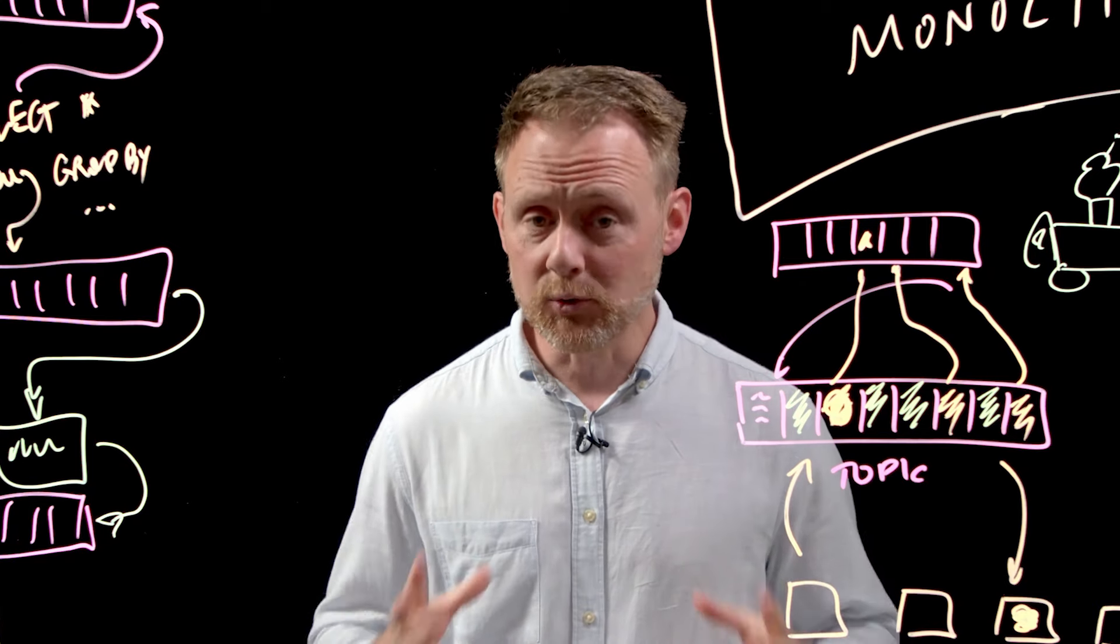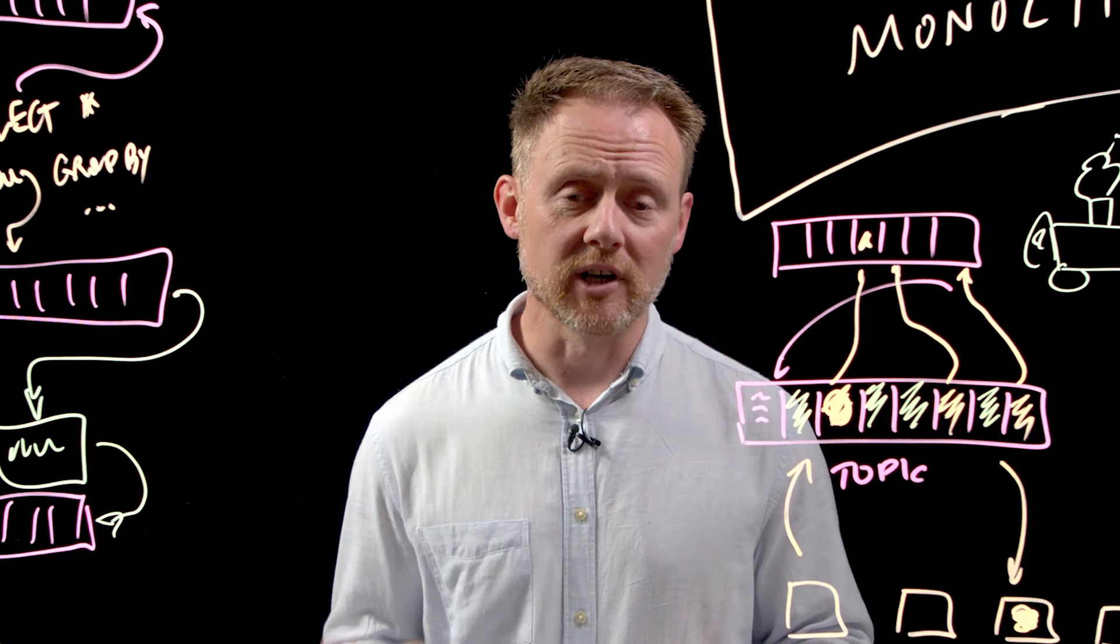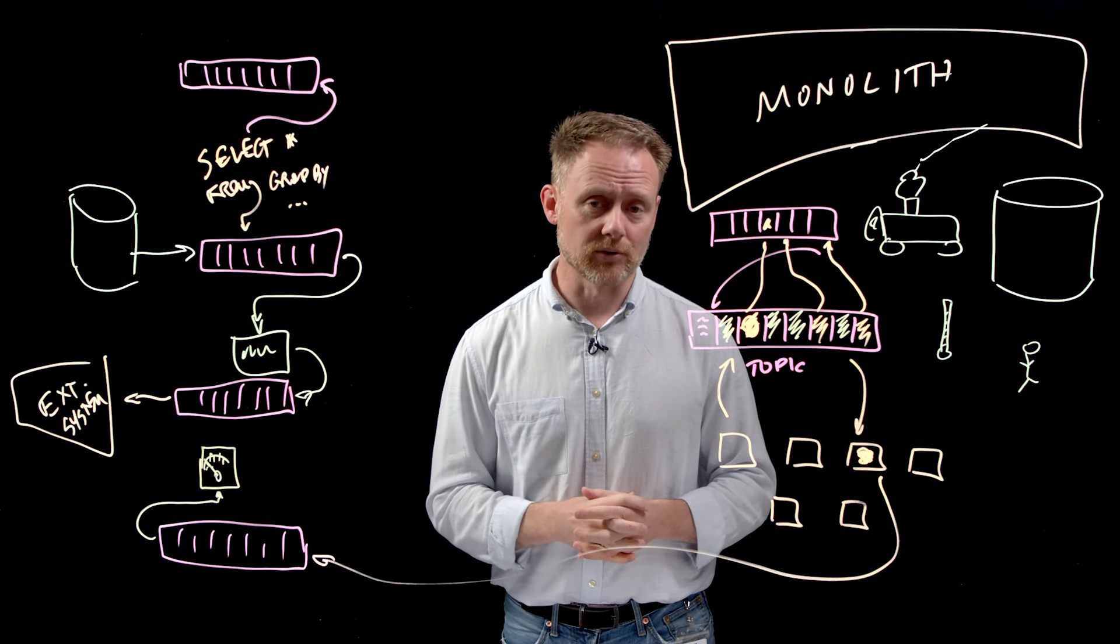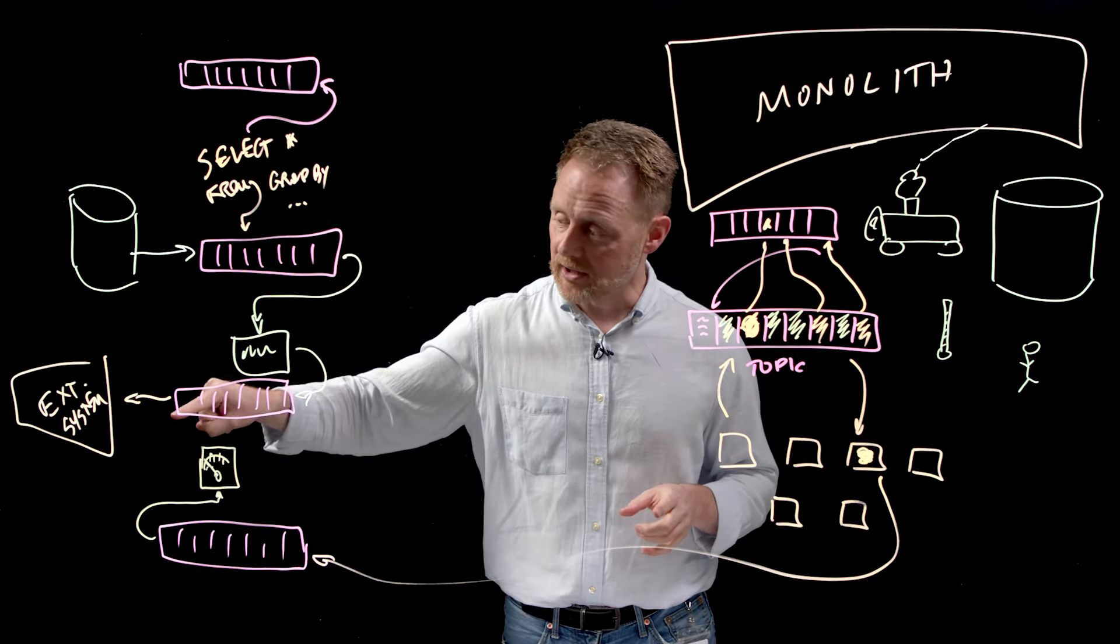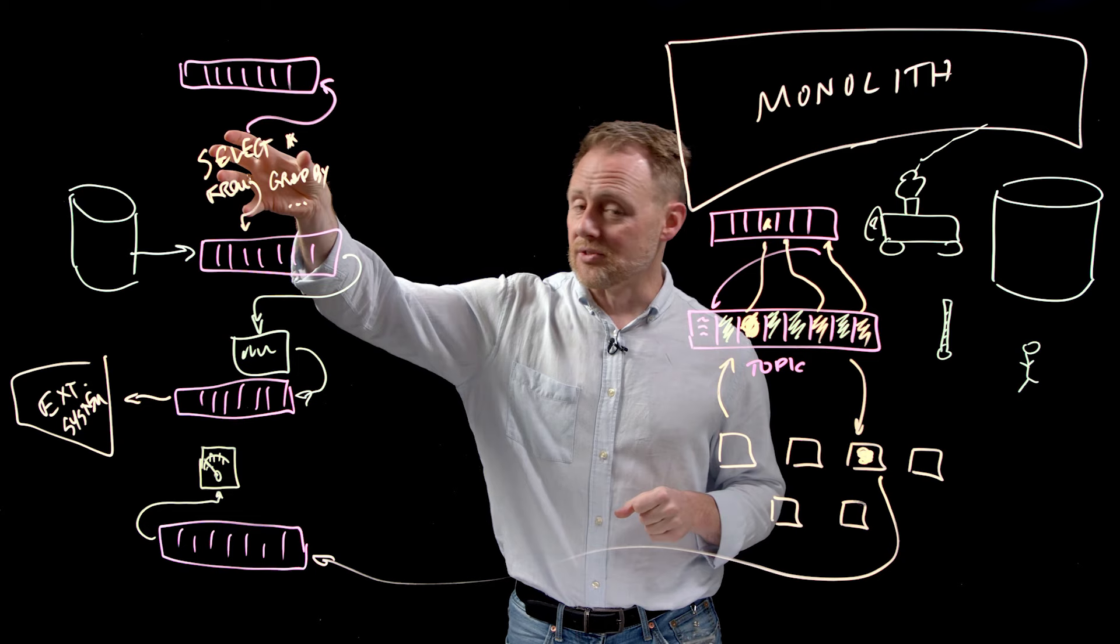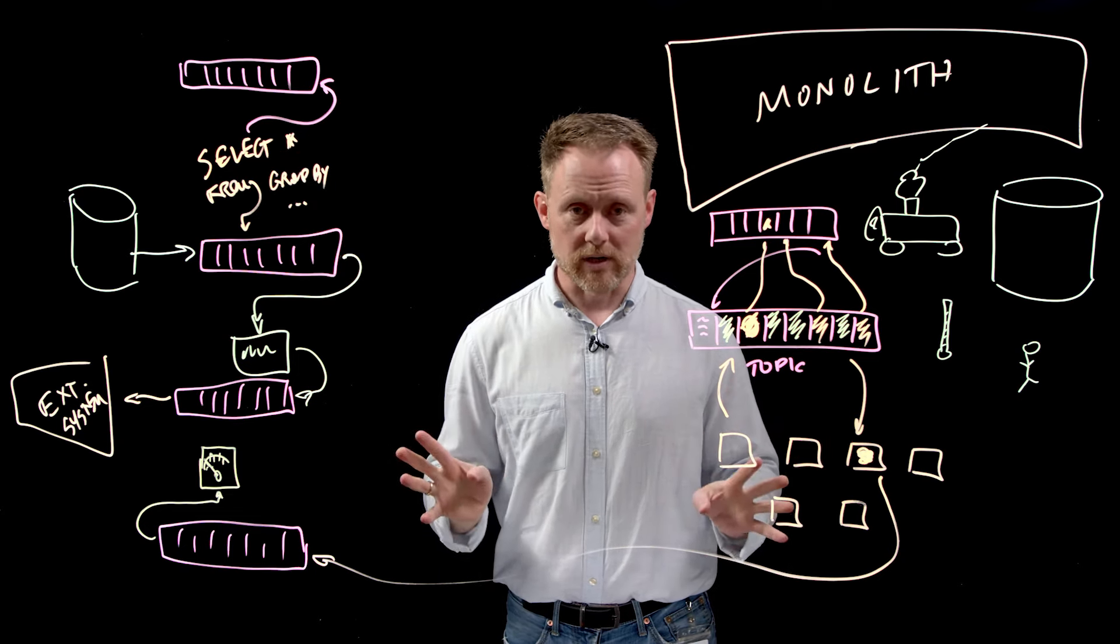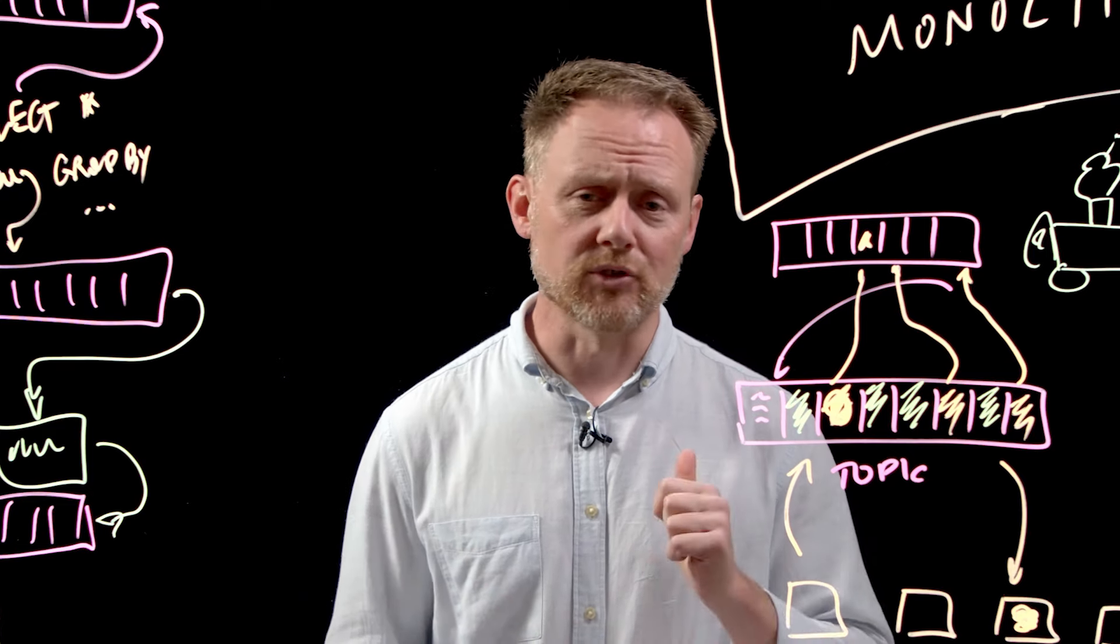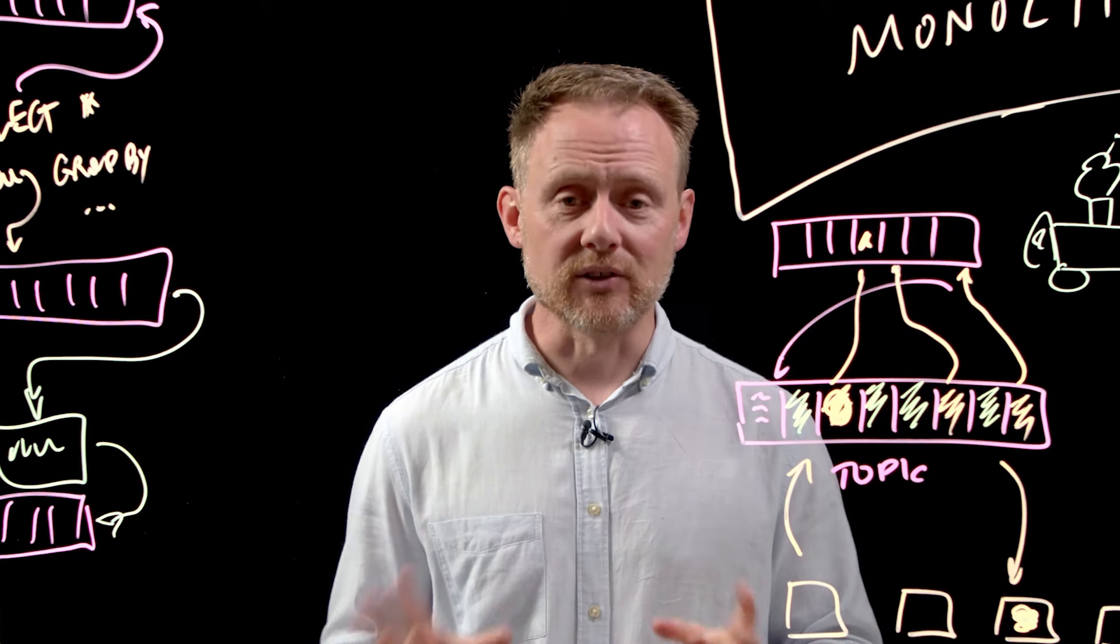And when I say platform, Confluent Platform is a distribution of Apache Kafka that you can use in a number of ways. Number one, there are open-source and community-licensed components of Confluent Platform that are free to use. There's a lot of these connectors, there's KSQL, components like that, you can just download and use for free. There are other components of Confluent Platform that come with an enterprise subscription, things like multi-data center support, enterprise-grade subscription, and things like that.